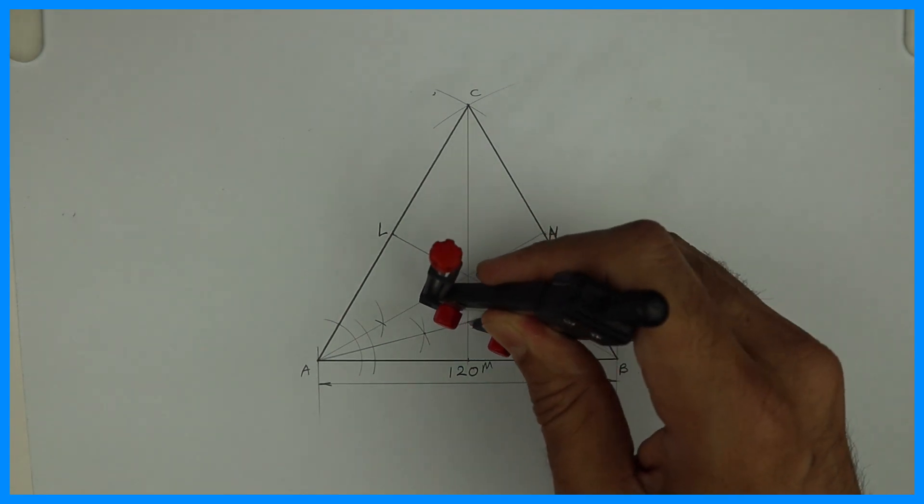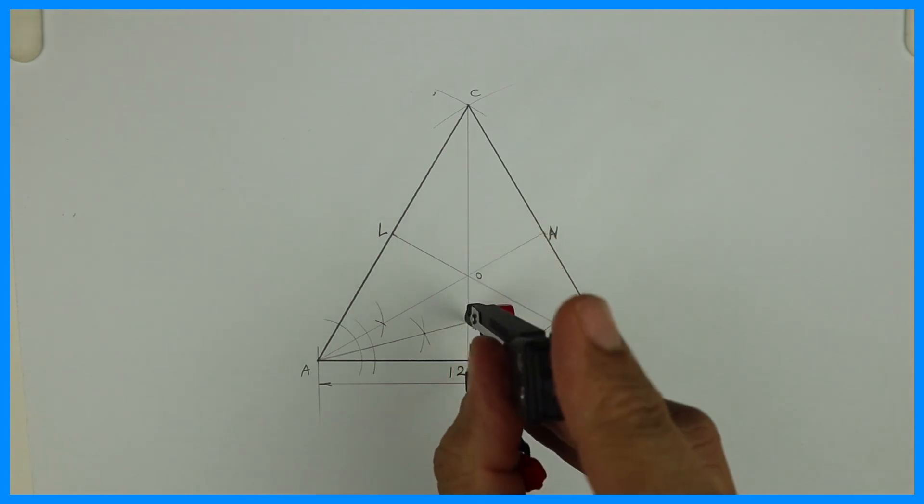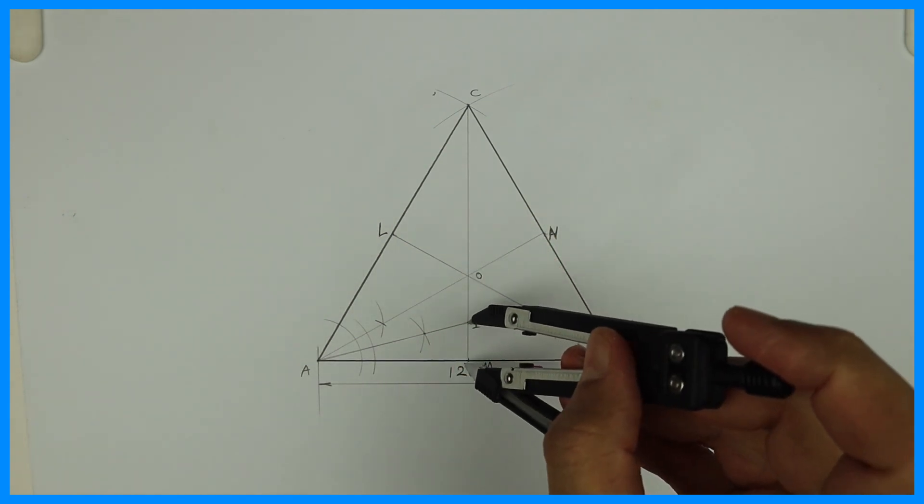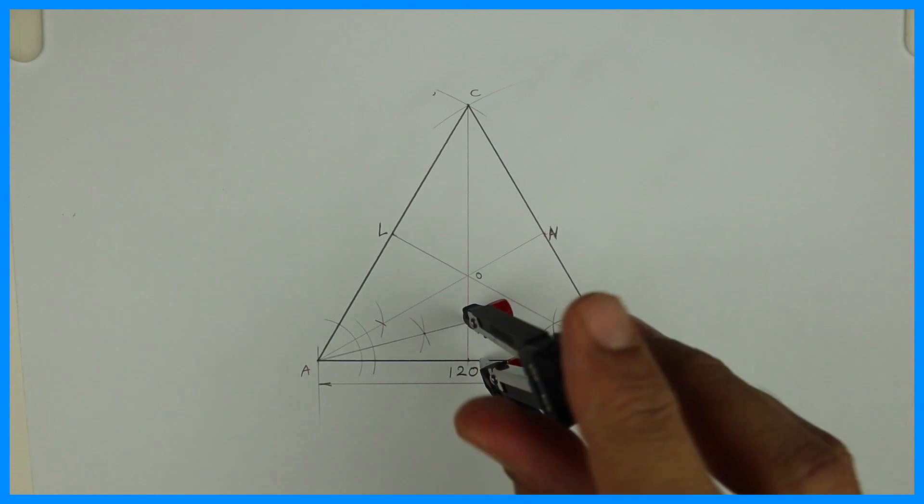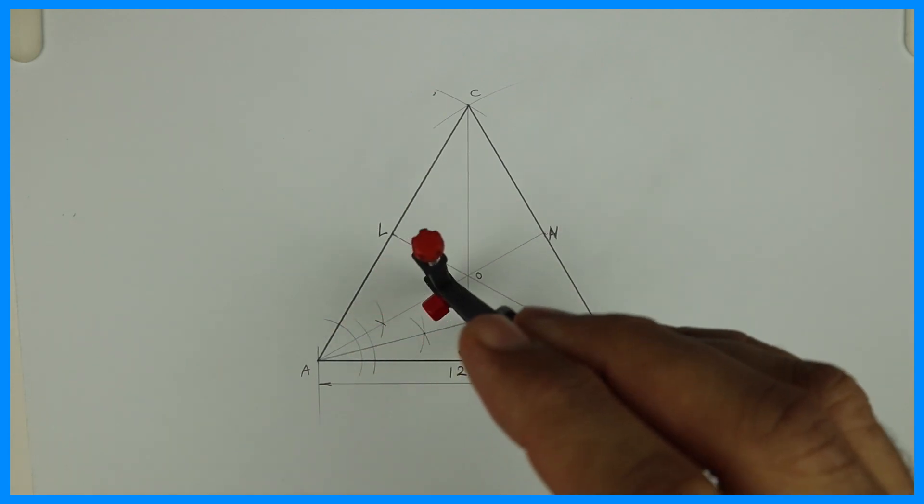After that you take 1 to M and draw a circle. So the circle what you are drawing will touch one side of the triangle and two other circles.